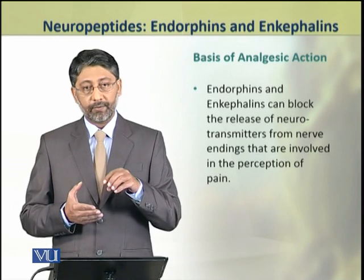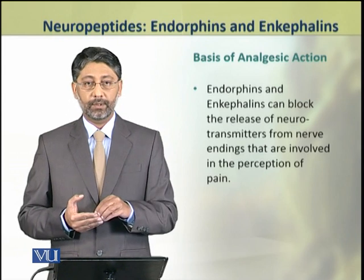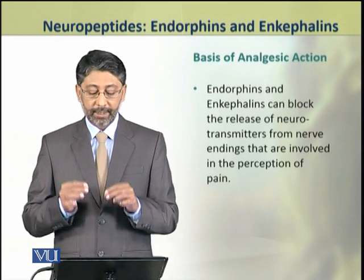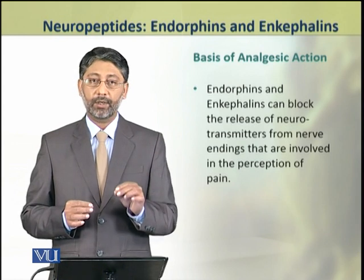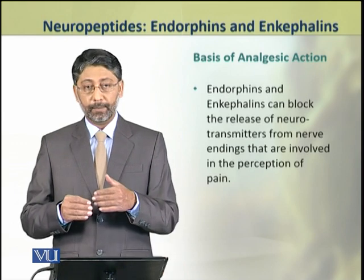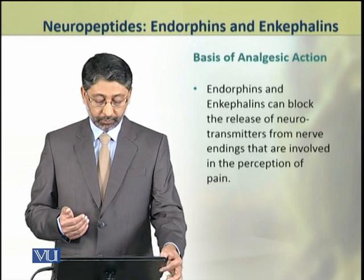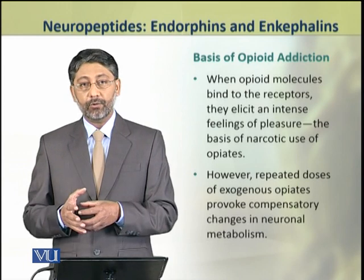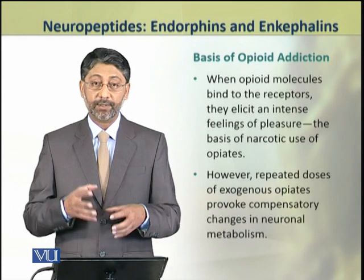Now, what is the basis of analgesic action of opioids? The opioids block the release of neurotransmitters from the nerve endings that are involved in the perception of pain. Because the neurotransmitters involved in pain perception have their release blocked, the sensation of pain is reduced. When these opioid molecules bind to the receptors, they also produce an intense feeling of pleasure.